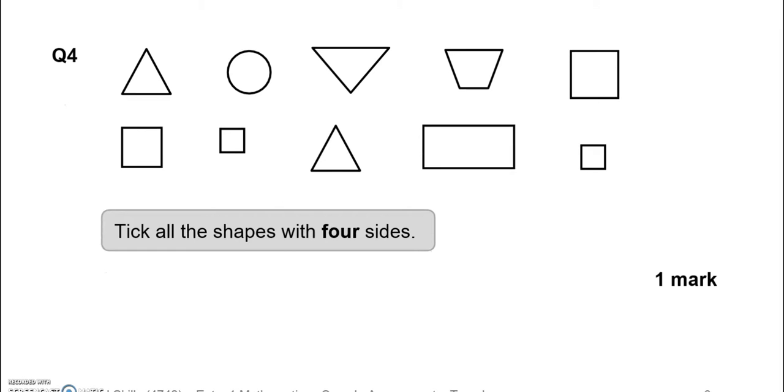Tick all the shapes with 4 sides. There is a square and another square and a rectangle and another square and a square and a trapezium here.